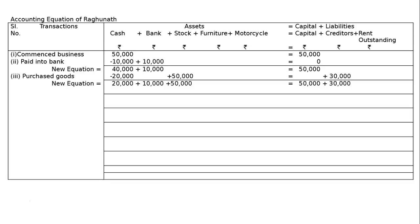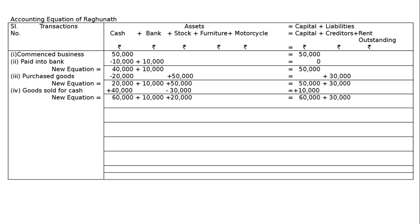Fourth transaction: sold goods for cash Rs. 40,000, costing Rs. 30,000. Goods costing Rs. 30,000 were sold for Rs. 40,000 cash. Add Rs. 40,000 to cash since cash is coming into the business. Stock is going out from the business, so minus Rs. 30,000 from stock. The profit of Rs. 10,000 is added to capital. The new equation is noted.